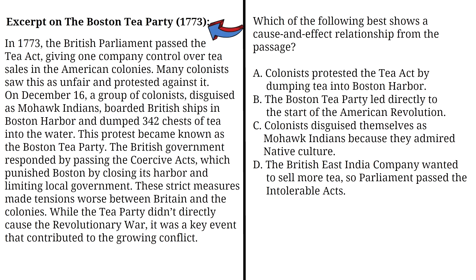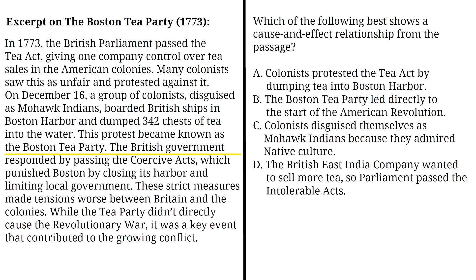Read the excerpt on the Boston Tea Party in 1773 and answer the following question. In 1773, the British Parliament passed the Tea Act, giving one company control over tea sales in the American colonies. Many colonists saw this as unfair and protested against it. On December 16, a group of colonists, disguised as Mohawk Indians, boarded British ships in Boston Harbor and dumped 342 chests of tea into the water. This protest became known as the Boston Tea Party. The British government responded by passing the Coercive Acts, which punished Boston by closing its harbor and limiting local government. These strict measures made tensions worse between Britain and the colonies. While the Tea Party didn't directly cause the Revolutionary War, it was a key event that contributed to the growing conflict.